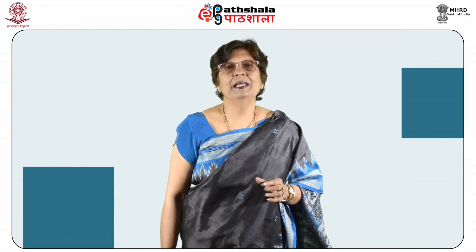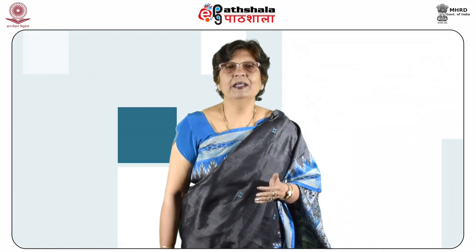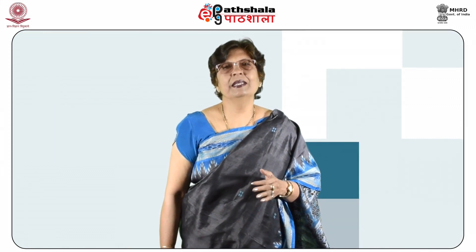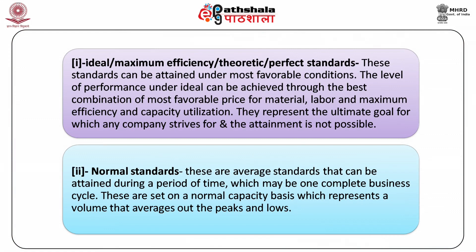We will now learn about various types of standards. On the basis of attainability of standards and frequency with which standards are revised, the standards are classified as ideal, normal, basic, current or expected actual standards. Number one: ideal or maximum efficiency or theoretic or perfect standards. These standards can be attained under the most favourable conditions. The level of performance under ideal can be achieved through the best combination of most favourable price for material, labour, maximum efficiency and capital utilisation. They represent the ultimate goal for which any company strives, and attainment is not always possible.